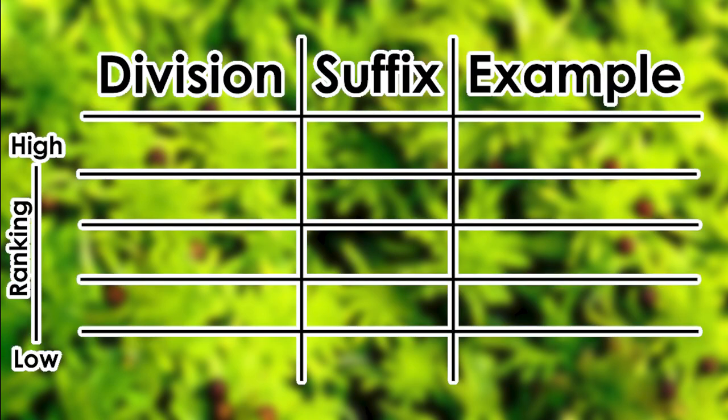Most taxa — the plural of taxon, which is what we call each level of the taxonomic system — has its own rules for how they are named and written. Generally, names for taxa are in Greek or Latin and they have different suffixes added onto them to denote what rank they are just by looking at them.